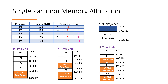Meanwhile, the memory that we have: we have to allocate these processes in a total of 2620 KB memory space available. This means that 0 to 450 KB is occupied by the operating system, and we have 2170 KB of free space to allocate.